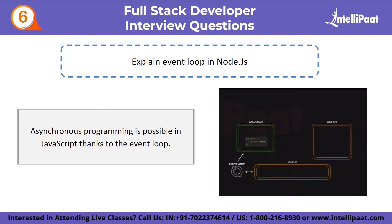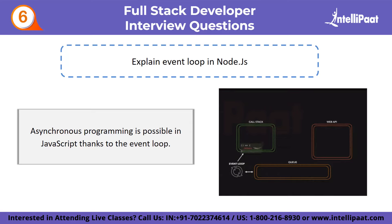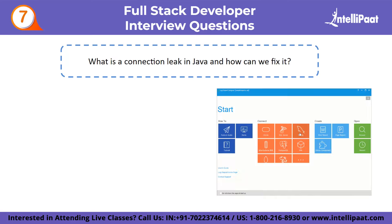There are various phases in the event loop, such as pending callbacks, closing callbacks, timers, idle or preparing, polling, and checking — with different FIFO (first-in, first-out) queues. Next question: what is a connection leak in Java and how can we fix it?